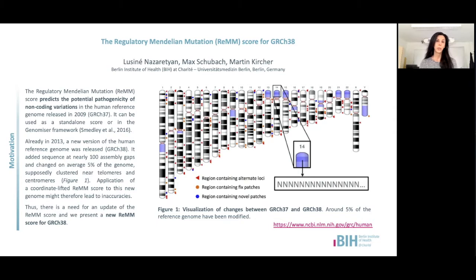The REM score was developed in 2016 as a pathogenicity assessment of the human genome variation for GRCh37. However, some years ago a new version of the human reference genome was released and it has certain differences to the previous version, including around 100 new integrated sequences. Application of the REM score to the new genome release might lead to errors. This is why we decided to develop a new version of the REM score, particularly for GRCh38.